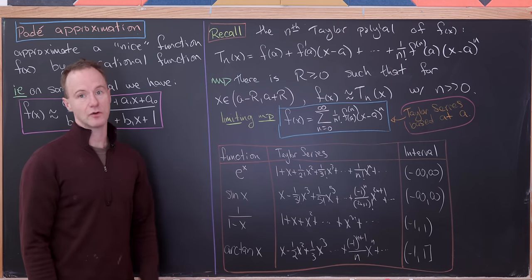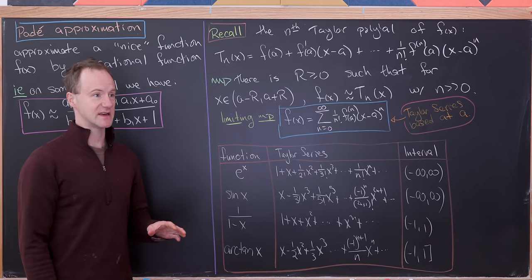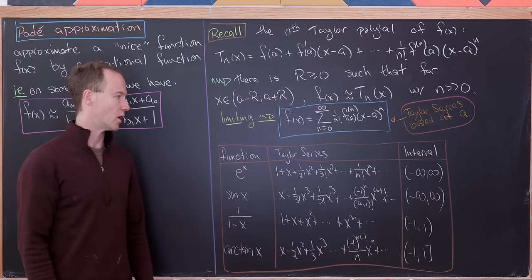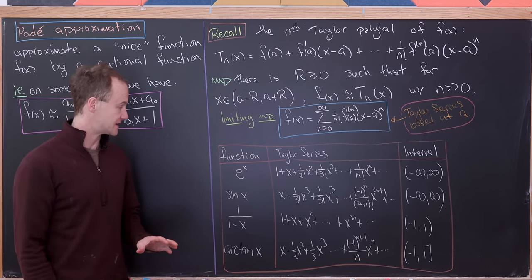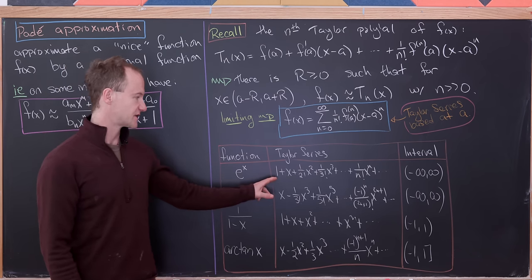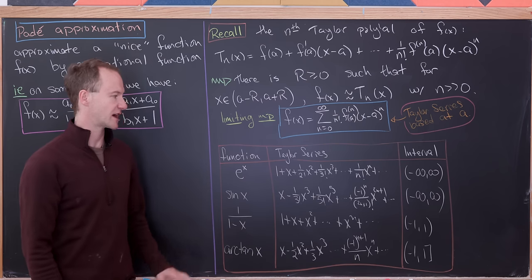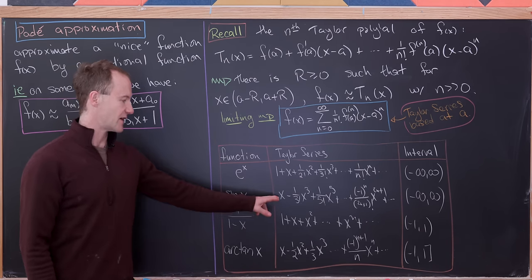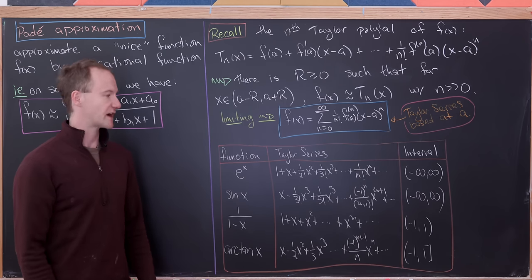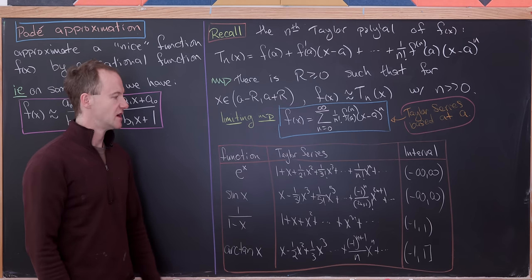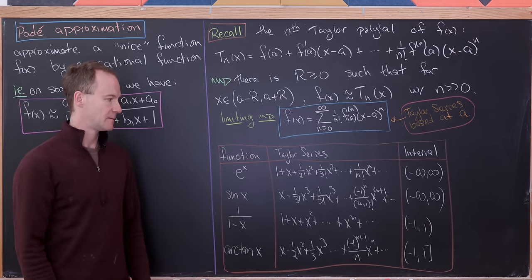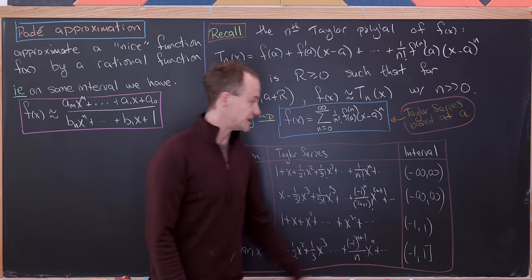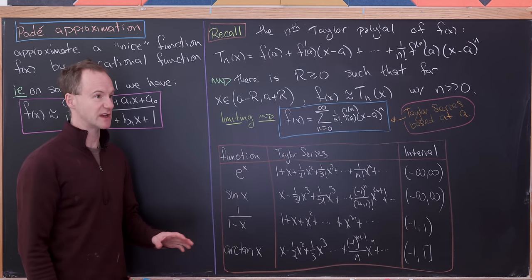Here are some well-known common Taylor series, centered at a = 0, which you can truncate to get Taylor polynomials of whatever degree you want. For e^x, the series is 1 + x + (1/2!)x^2 + ..., with general term (1/n!)x^n. For sin(x), it's x - (1/3!)x^3 + (1/5!)x^5 + ..., with general term (-1)^n / (2n+1)! · x^(2n+1). Both of these converge for all real numbers.